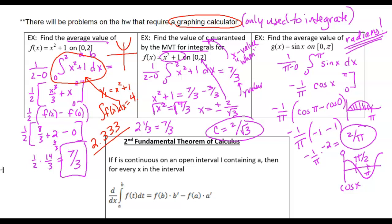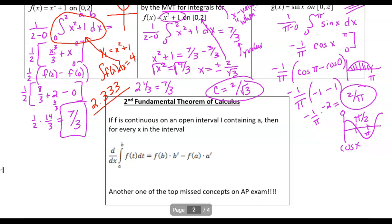That's a pretty nice answer for a really curvy area, and that's what they wanted — the average value, which is the height of the rectangle. Notice that going from zero to pi, my answer wasn't right in the middle. Two over pi is a little bit less than one — about 0.637 — so the rectangle height is here, not halfway. People think it'll just be in the middle, but that's not how curves work.